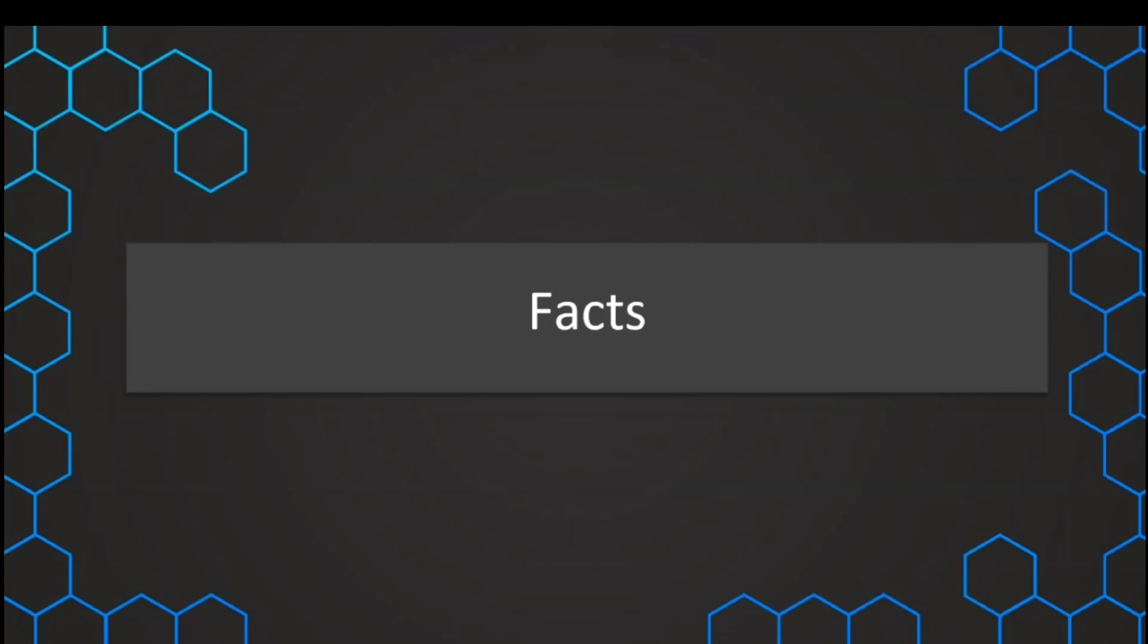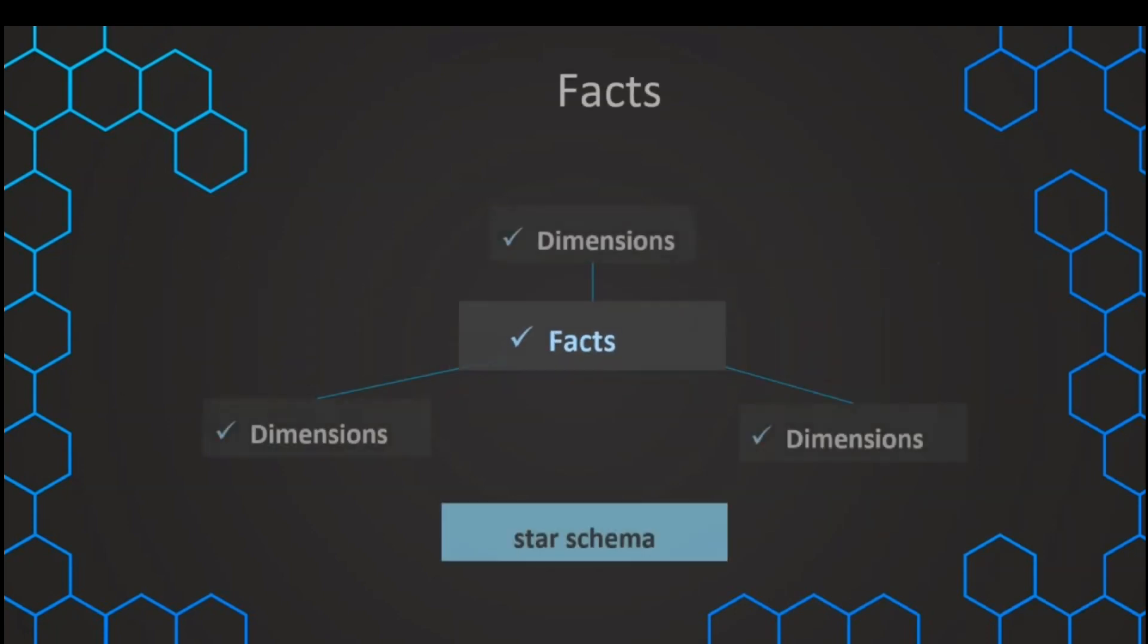Now, let's understand what are facts and fact tables in our data warehouse. The distinction between facts and dimensions is sometimes not so easy and not so clear, and that's why we want to make it a little bit more understandable and make the distinction between them clear.